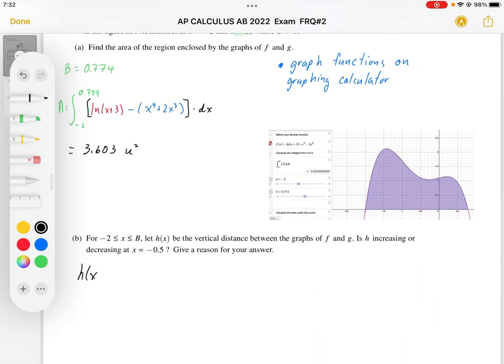So H of X is going to be equal to ln(X plus 3) minus X^4 plus 2X^3. That's going to be our H function. So we're going to find whether it's increasing or decreasing.